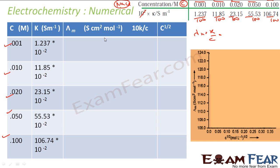K is in Siemens per meter. I need to convert it to Siemens per centimeter, so I will divide K by 100 — instead of per meter, it becomes per centimeter.